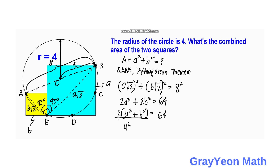We have A squared plus B squared equals 64. Dividing both sides by 2 gives us A squared plus B squared equals 32. Since the combined area we are looking for equals A squared plus B squared, the answer is 32 square units.